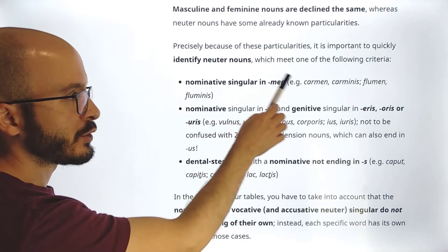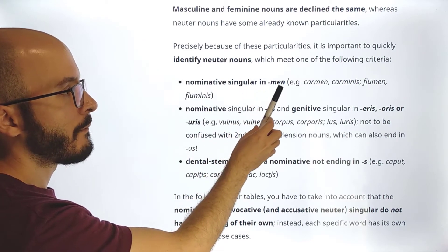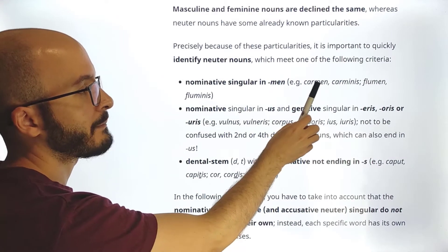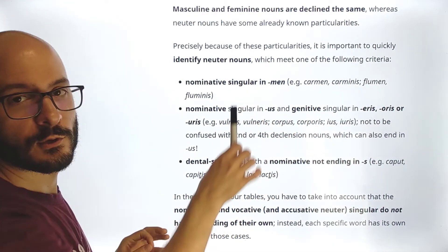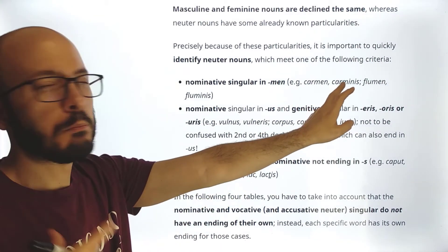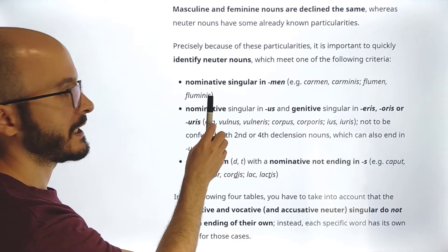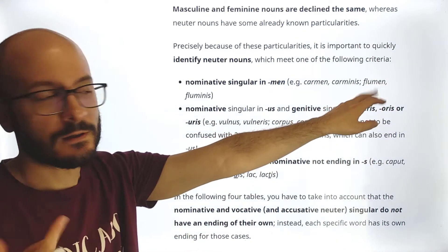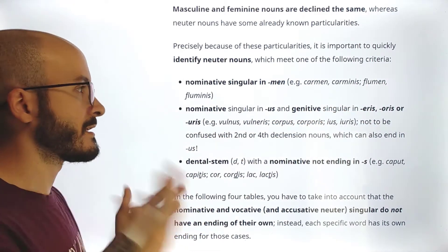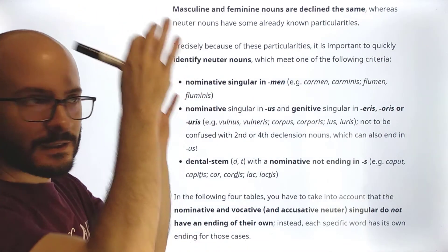The easiest criterion to see: nominative singular ending in '-men' and genitive in '-minis.' For example, 'carmen, carminis' — this is neuter because the nominative ends in '-men.' This word means poem or song. Then 'flumen, fluminis,' which is river. Also 'agmen, agminis,' etc. All '-men / -minis' nouns are automatically neuter.